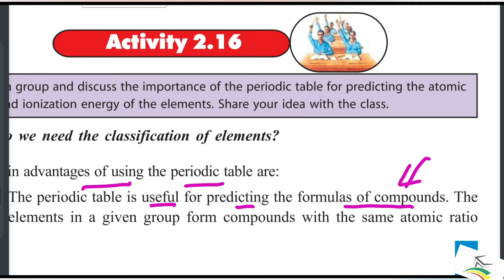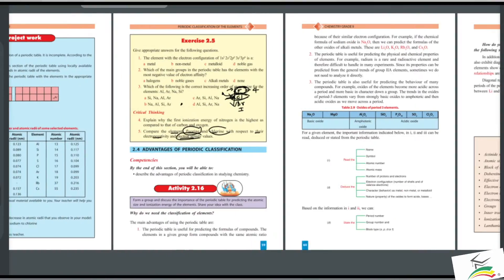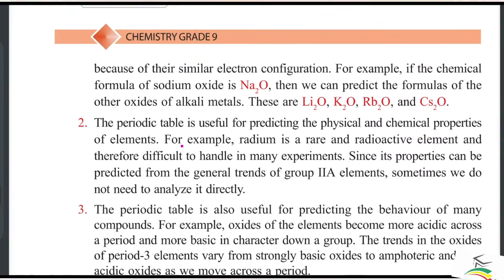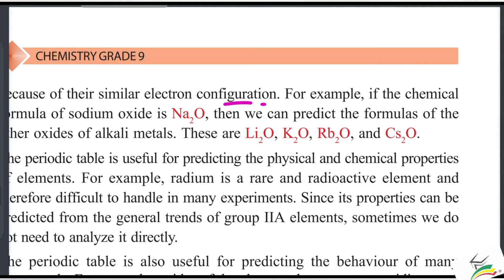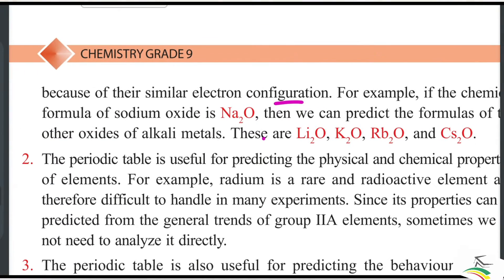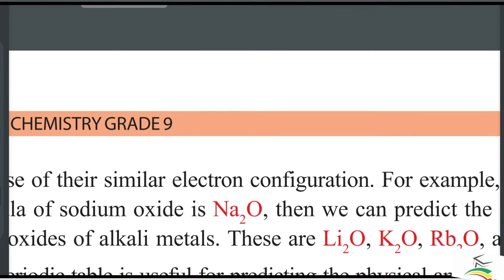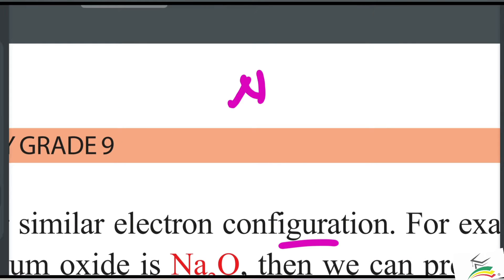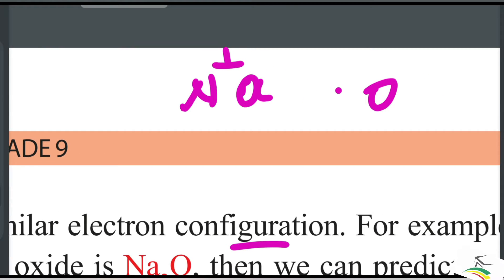Elements in a given group have the same atomic ratio because of similar electron configuration. If the group is the same, we know that the ratio is consistent. For example, sodium and oxygen — the oxygen group is in the same group as the 6th group elements.